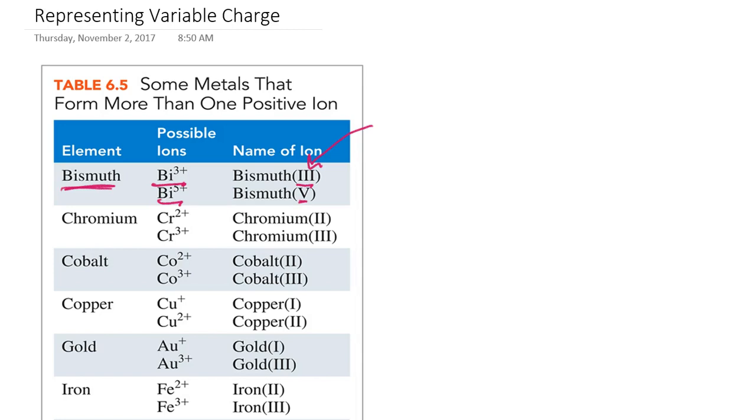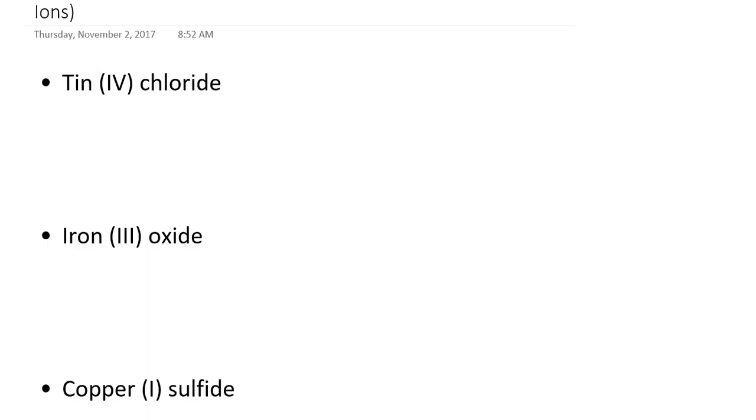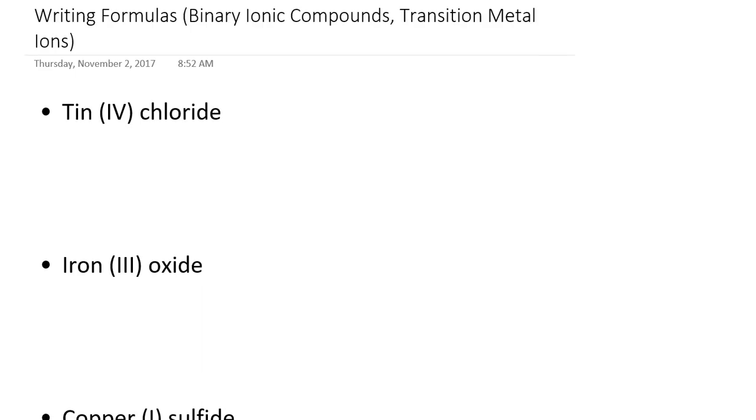Let's actually incorporate that in some formula writing and some naming of compounds based on the formula. Say for example that I want to write a formula for tin four chloride. If I have a transition metal cation ion then I'm going to use the abbreviation for tin. Tin is abbreviated Sn in the periodic table and I have a roman numeral 4, so that means that it's in its 4 plus charge state.